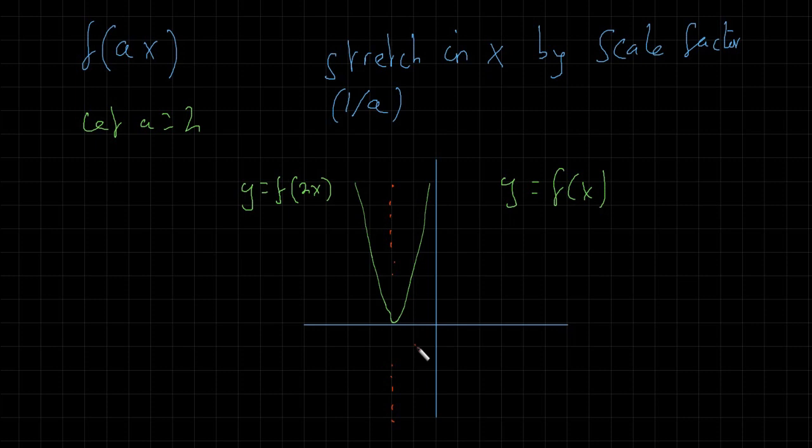So as we can see here the bottom of the graph is still on the line of symmetry. So we haven't moved it or translated it but we have stretched it in the x by a scale factor of a half. Because this point here, the top point, and this point here were both 3 units away from the line of symmetry as before. And now they are 1 and a half. So we've actually halved the actual distance in the x axis.